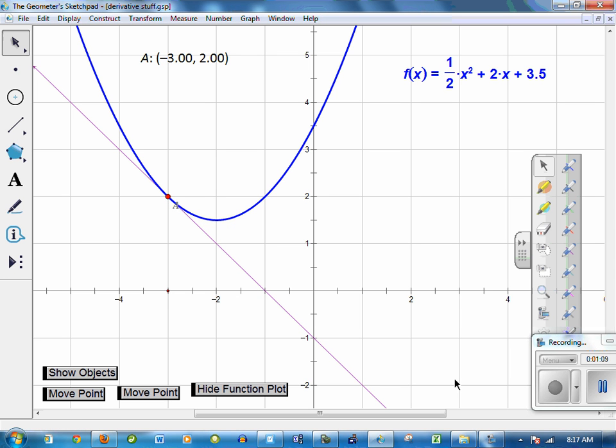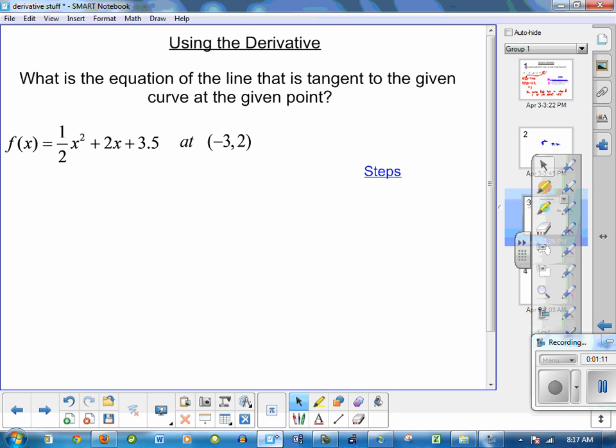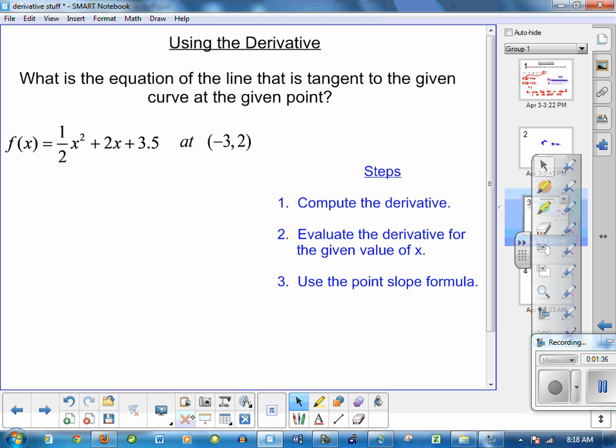It's a classic derivative problem, and the steps for doing so are very straightforward. Compute the derivative. Always going to be computing the derivative in problems like this. Number 2, evaluate the derivative for the given value of x. This will tell us the slope at that point. If we know the slope at that point and the point from there, it's very simple just to put our algebra skills to work and use the point-slope formula to find the y = mx + b of the tangent line.